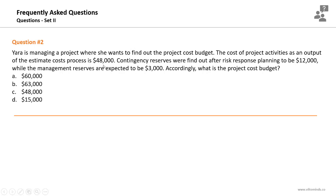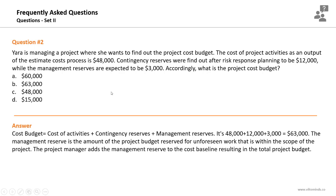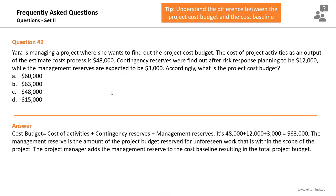If the question had asked about the project cost baseline, it would be $48,000 plus $12,000, which equals $60,000 USD. The project cost budget equals the cost of activities plus contingency reserves plus management reserves. So in our question, it's $63,000 USD. Understand the difference between the project cost budget and the cost baseline to answer such questions in the exam.